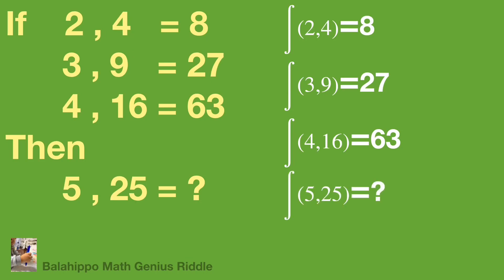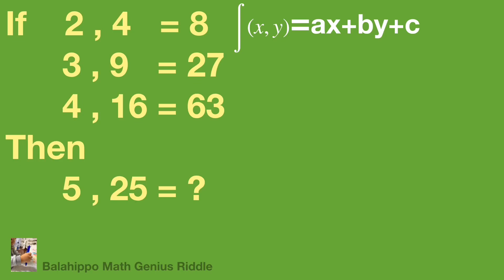Therefore, we need to find the value of f(5, 25). A polynomial approach would be a good direction. We are looking for a linear equation in three unknowns. Starting from f(x, y) = ax + by + c.